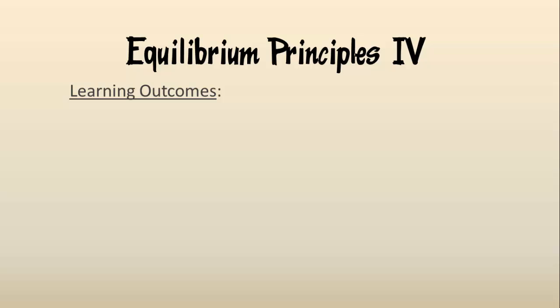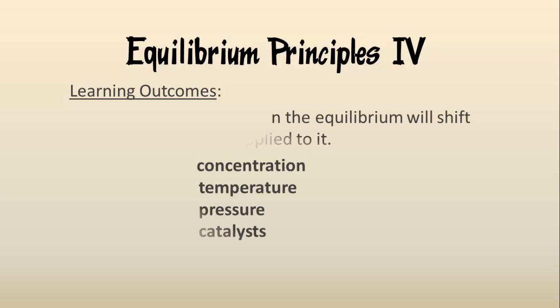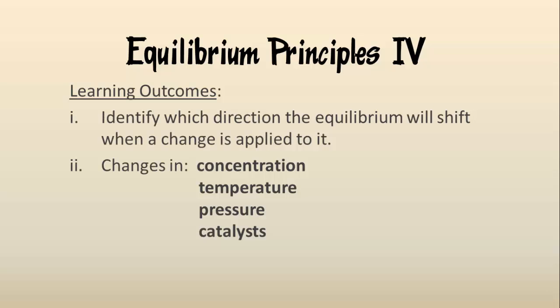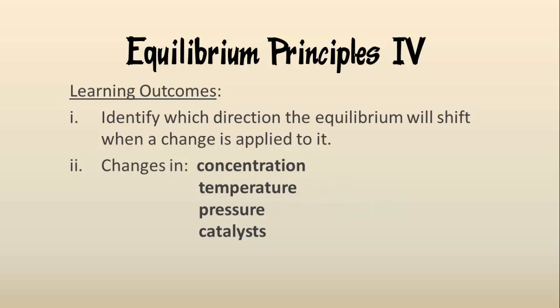Welcome to this fourth and final video presentation on equilibrium principles. In the previous video we learnt about the effect of changing concentration on an equilibrium reaction. In this video we will finish off the variables by examining the effect of changing temperature and pressure. In both of these we will look at both an increase and decrease on this factor. We will also look at what using a catalyst does to an equilibrium system.